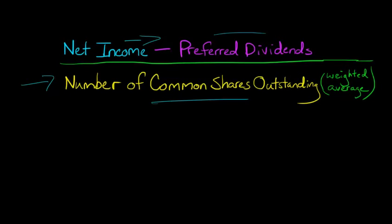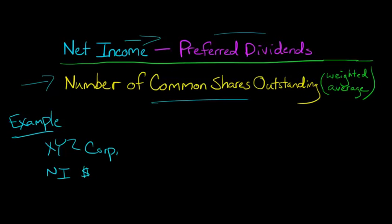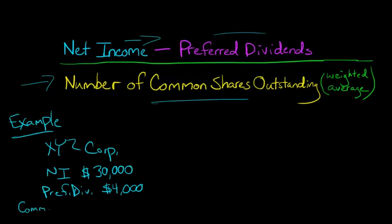It might be a little bit easier to understand if we have an example. So let's say we have XYZ Corporation. XYZ Corporation has net income of $30,000, preferred dividends of $4,000, and then common shares outstanding — we take the weighted average of the common shares throughout the year — so common shares outstanding, we've got 50,000 shares.